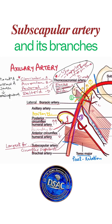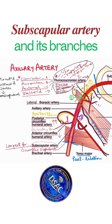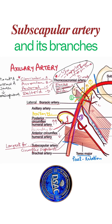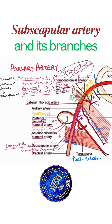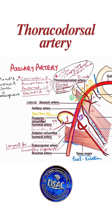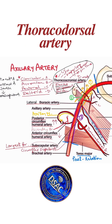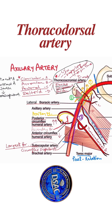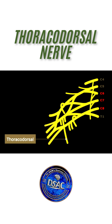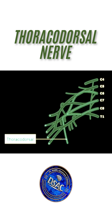After giving out the circumflex scapular artery, the subscapular artery gets a different name — its continuation downward is called the thoracodorsal artery. This is easy to remember because you've likely read about a nerve with a similar name: the thoracodorsal nerve.